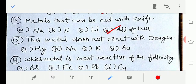Option number A magnesium, option number B sodium, option number C potassium, option number D gold. That would be option number D, gold, which is Au. Let's move to question number 16: Which metal is most reactive of the following?